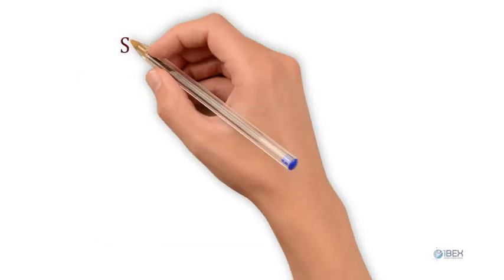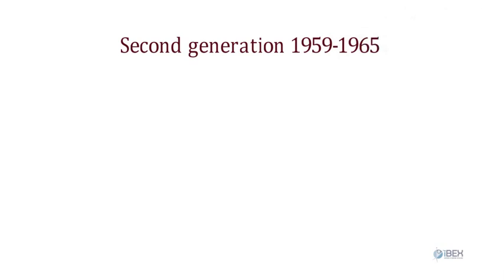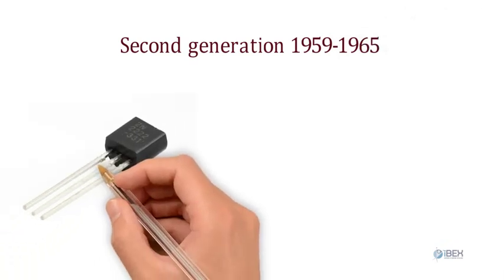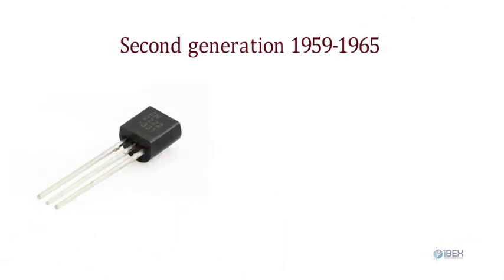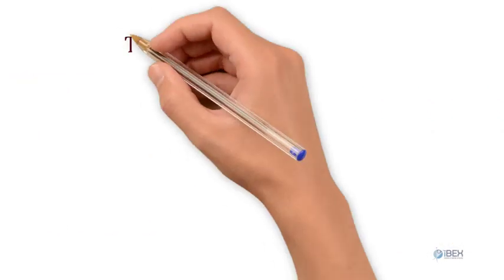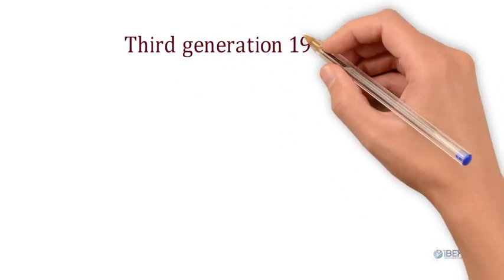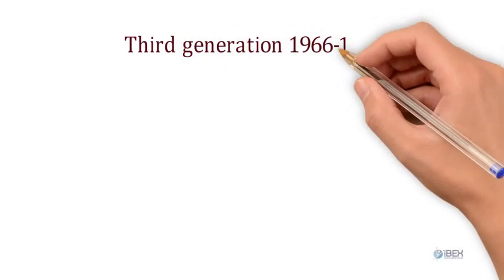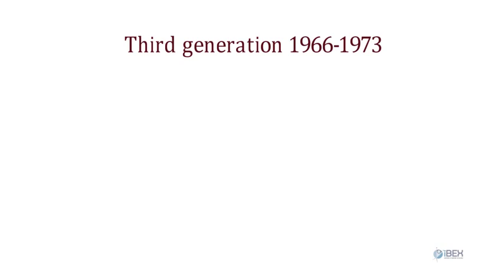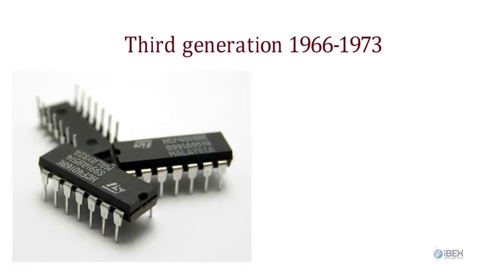Second generation computers (1959 to 1965) consisted of transistors — vacuum tubes were replaced by transistors, and the size of the computer was reduced considerably. Third generation computers (1966 to 1973) consisted of integrated circuits (IC), meaning many transistors on a single silicon chip. A single IC has many transistors, registers, and capacitors built on a single thin slice of silicon.